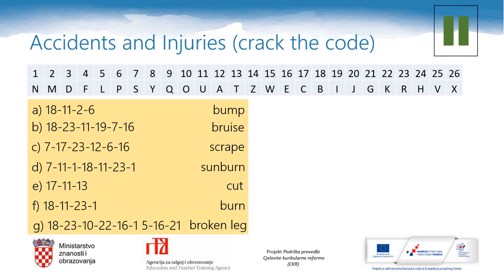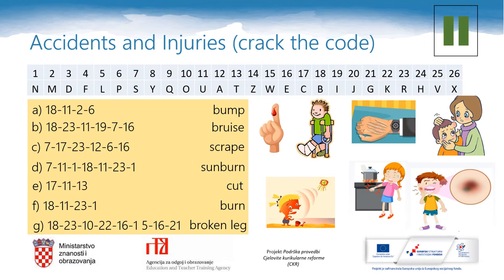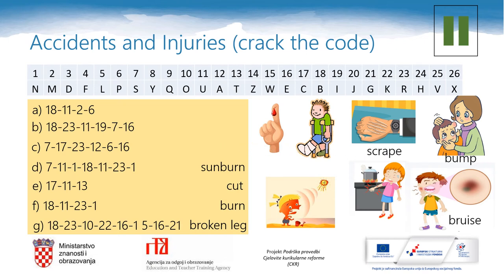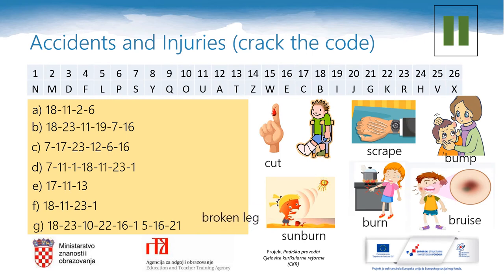What about the second test? You've got pictures — can you match the pictures and the words? A bump is called čvoruga in Croatian. A bruise — modrica. Scrape — ogrebotina. Sunburn — opekotina od sunca. Cut — posjekotina. Then you've got the burn — careful with the hot water. And you know this one: a broken leg. Great job, my detectives.